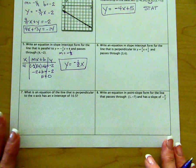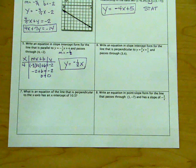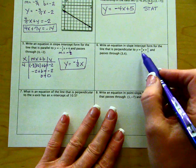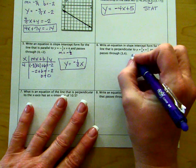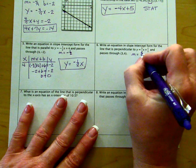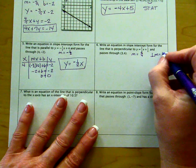For number six, we need to write an equation in slope-intercept form for the line that is perpendicular to y equals three-fourths x plus one-half. So the slope here is three over four, but the perpendicular slope then would be the negative reciprocal.